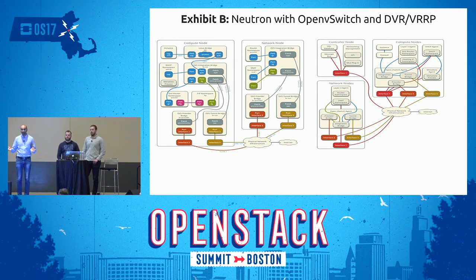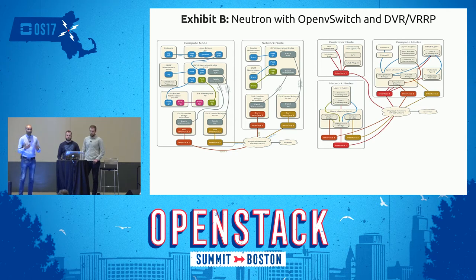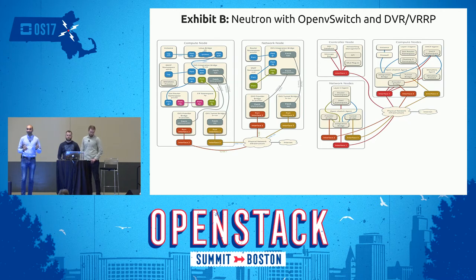If, like me, you've spent nights and weekends troubleshooting Open vSwitch and wondering why packets going into a virtual wire don't come out the other end, you know what I'm talking about. That is fundamentally an artifact of people conflating isolation with network topology by creating complex overlay networking.